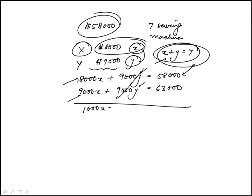We'll get 1,000X equals the difference of those two, which is 5,000. That means X equals 5, answer choice D.